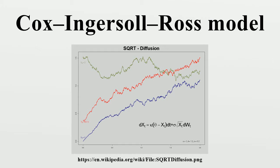The CIR model specifies that the instantaneous interest rate follows the stochastic differential equation, also named the CIR process, where W is a Wiener process. The parameter corresponds to the speed of adjustment, to the mean, and to volatility.